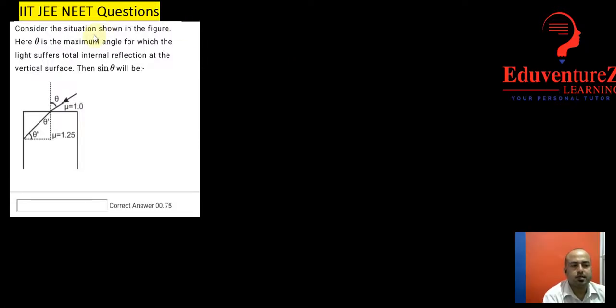Hello students, so here is a question which says consider the situation shown in figure, here theta is the maximum angle for which light suffers total internal reflection at the vertical surface then find the value of sine theta.